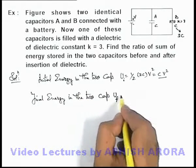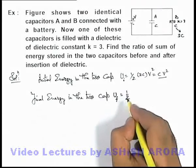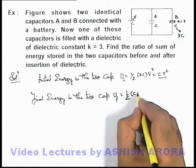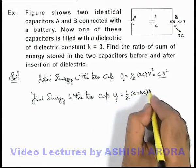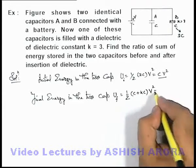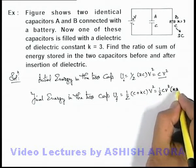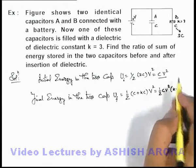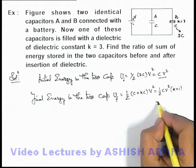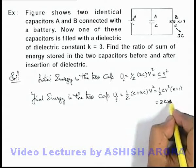U final is half, total capacitance will be C plus kC, multiplied by V square. This can be written as half CV square multiplied by k plus 1. As the value of k is 3, it will be 4, so this can be written as 2CV square.